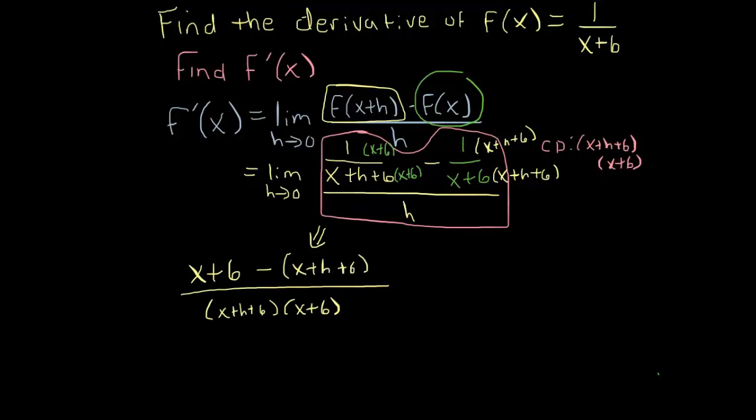and then 1 times (x+h+6). Be very careful, make sure you put that x+h+6 in parentheses, this minus here is going to have to distribute to each of those terms. Now that's all over h.